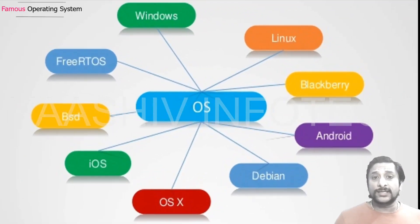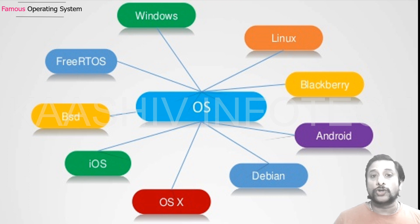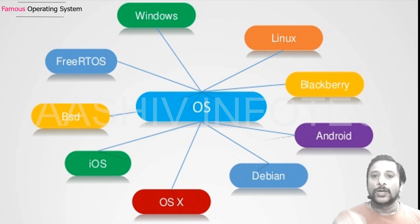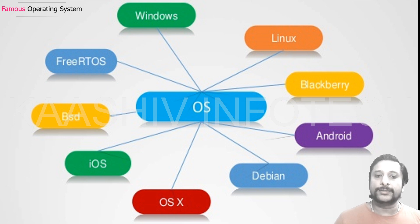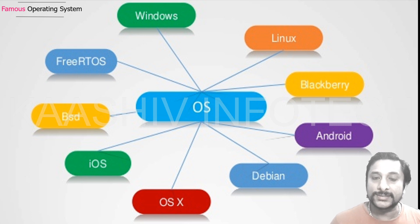Here are the major operating systems available. Windows is the top number one dominating operating system. We also have Linux, BlackBerry, Android, Debian, OS X, iOS, BSD, and free real-time operating systems. There are multiple types of operating systems, and we'll explore those in the near future.